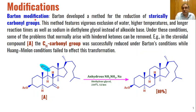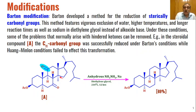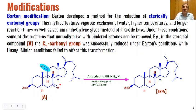The Barton modification is applicable for the reduction of sterically hindered carbonyl compounds, mainly applied to steroids. In steroids, the C-11 carbonyl group is sterically hindered and difficult to reduce. Using the Barton modification with anhydrous hydrazine and sodium metal, the sterically hindered C-11 carbonyl group is reduced along with other non-hindered carbonyl groups.